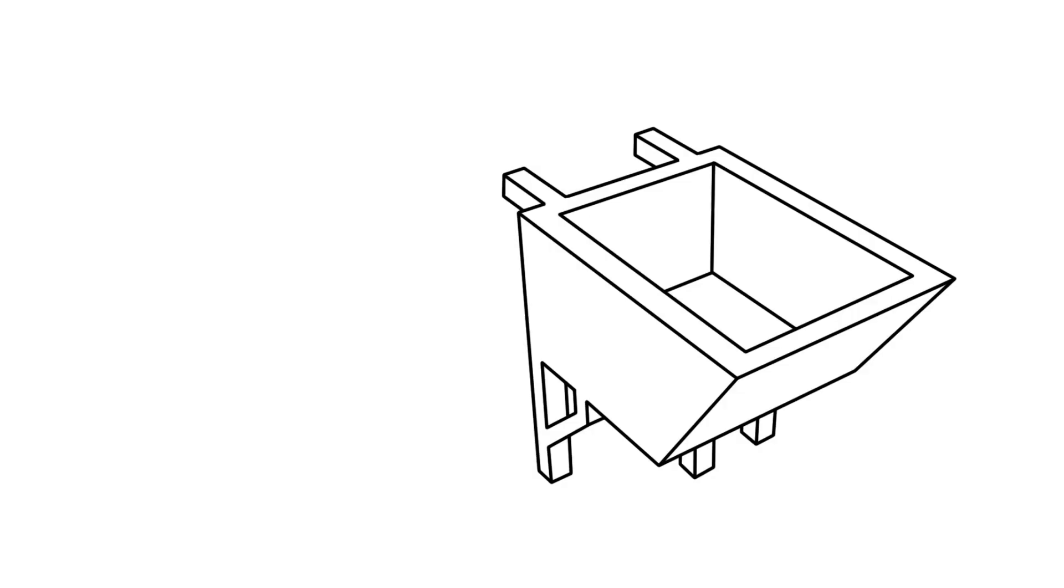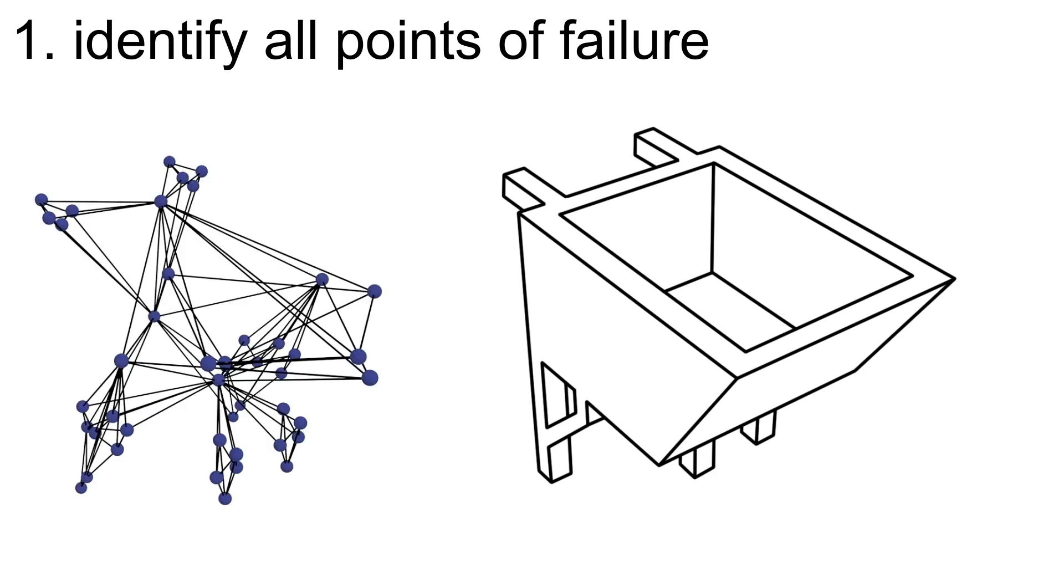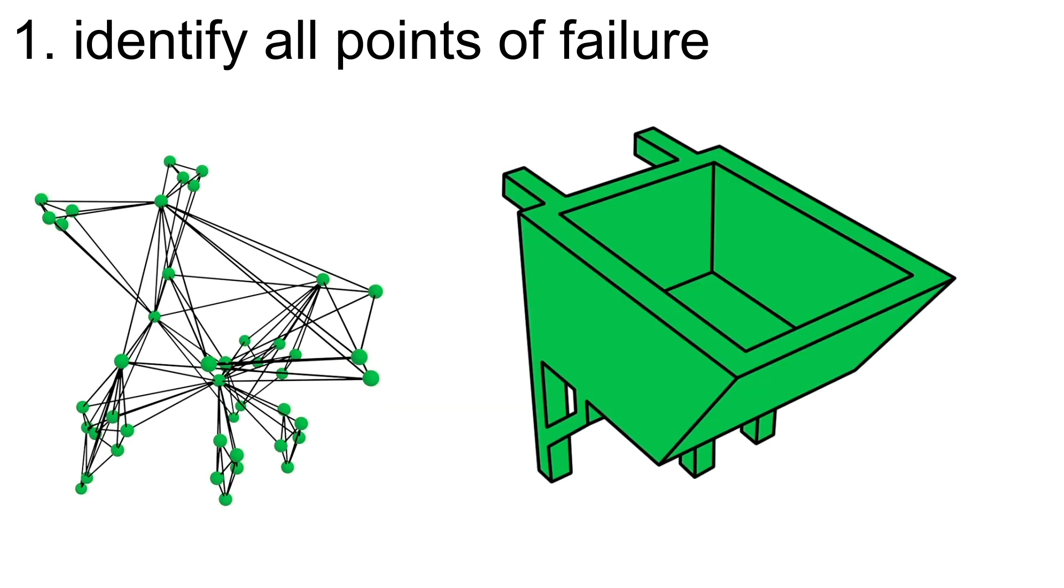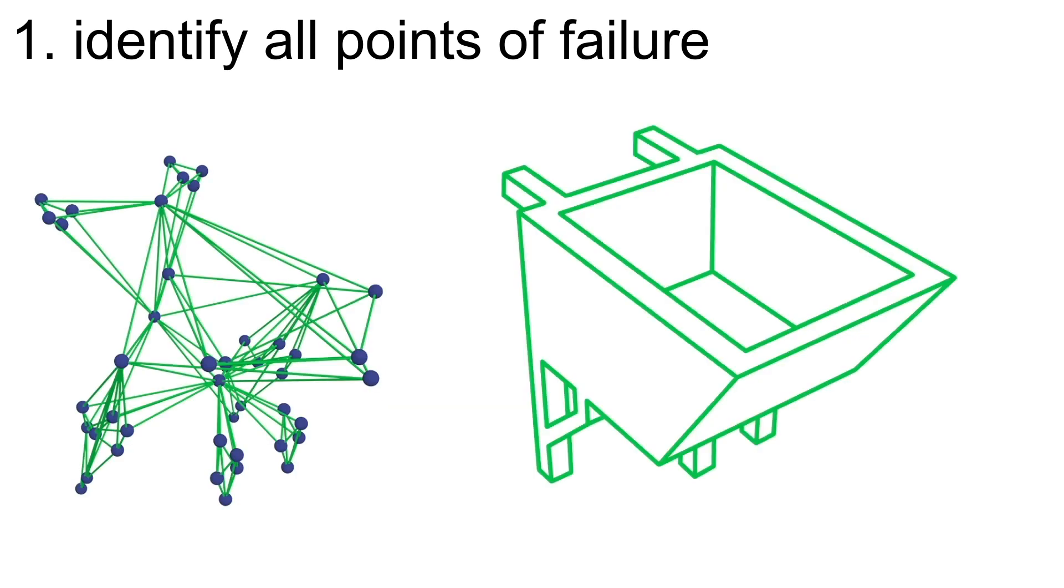The algorithm is divided into two parts. In the first step, FastForce identifies all the points of failure in the model. To speed up its analysis, FastForce represents the object as a simplified graph. The plates are represented as nodes, while the joints between the plates are represented as edges.